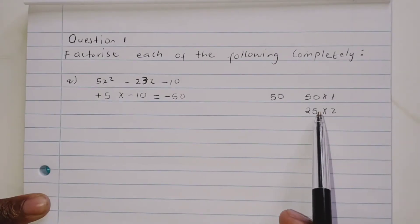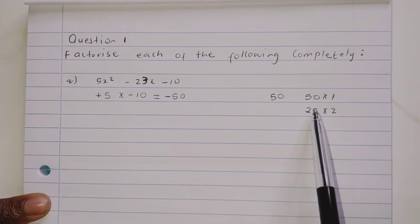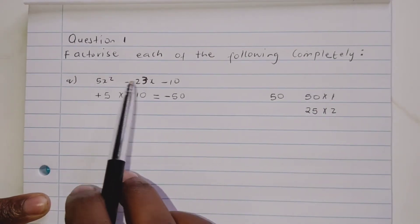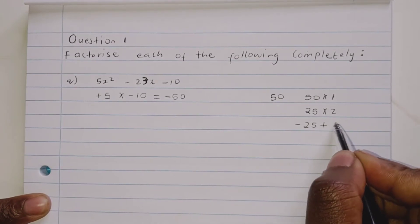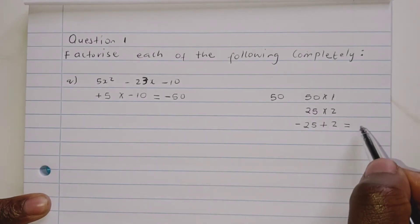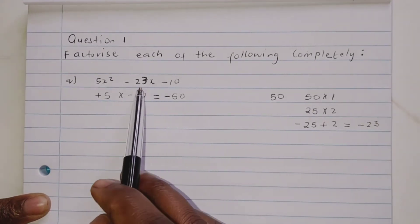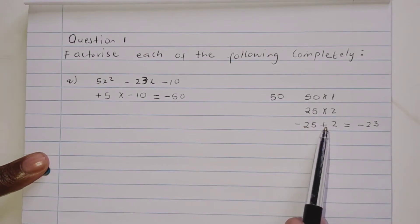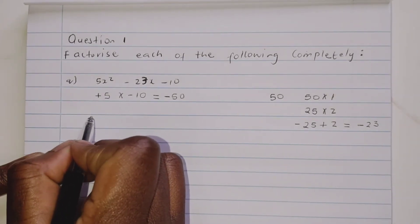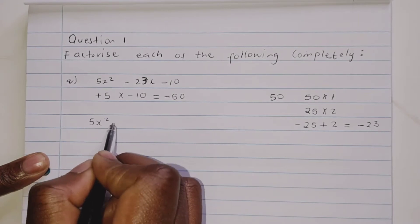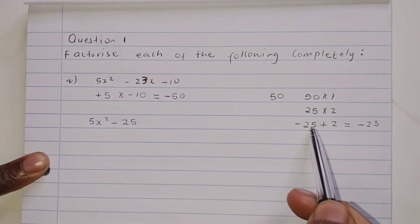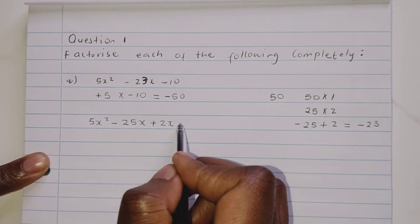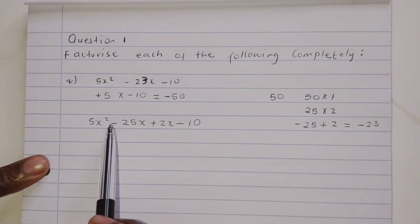We're looking for 23, and 25 minus 2 equals 23. Since the sign here is negative, we're gonna use negative 25 plus 2, which gives negative 23 — our required middle value. So the middle term can be split as negative 25x plus 2x. We're gonna rewrite the expression as 5x squared minus 25x plus 2x minus 10.